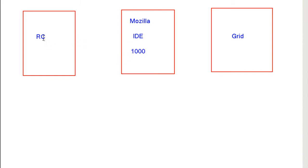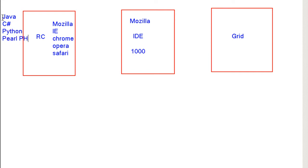IDE is primarily a record-and-run tool. It's JavaScript-based. To overcome all these disadvantages, people started using RC. RC could test on multiple browsers and it could actually work with multiple languages as well - you could use Java with RC, C#, Python, Perl, PHP. It's not that if your website is made in Java you need to use Selenium RC with Java. If your website is made in any language, you can use RC with any language to test it - it is independent of the language in which the website is made.